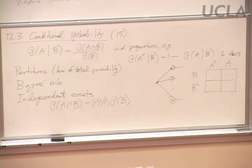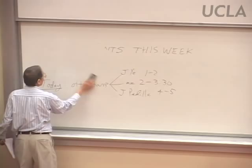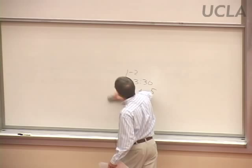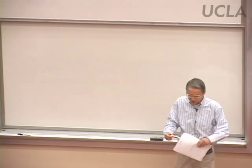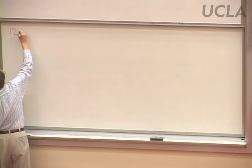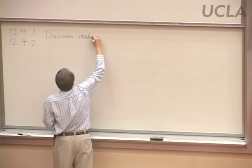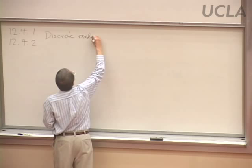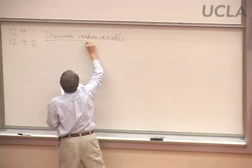Then there are the first four subsections of 12.4, on random variables. So far we've only talked about discrete random variables; in section 12.5 we'll talk about continuous random variables. 12.4.2 was about discrete random variables, with 10 problems.